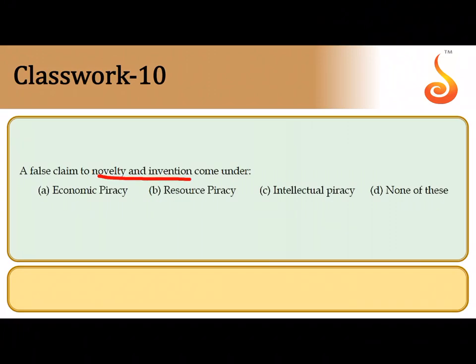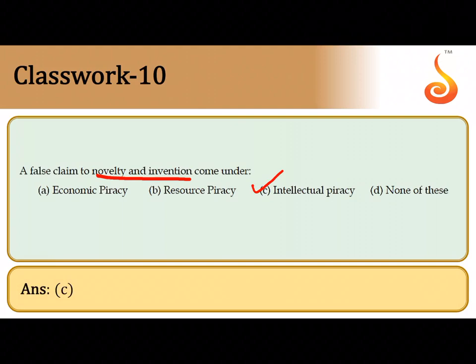The tenth question: a false claim to novelty and invention — something which has not been invented by you but is already in use in another foreign region. If you claim that invention as your own, you have stolen the intellectual property. This stealing of intellectual property of another region or group of people is referred to as intellectual piracy. So the answer is option C.